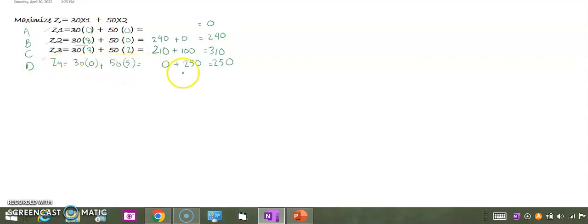Similarly, I have put corner point D into the objective function, which is 30 by 0 and 50 by 5, and then we get 250. So among all the points that we have put and the answers that we have got, the maximum profit that we can make is with corner point C.